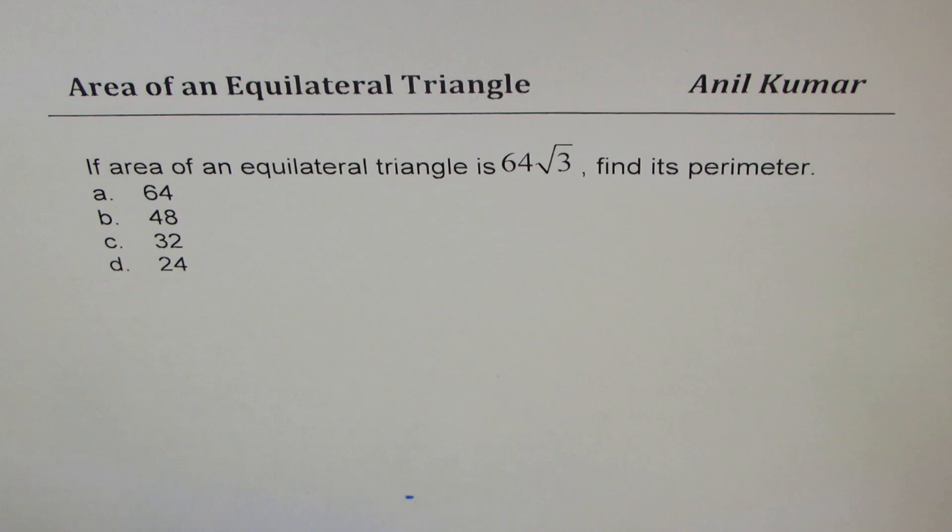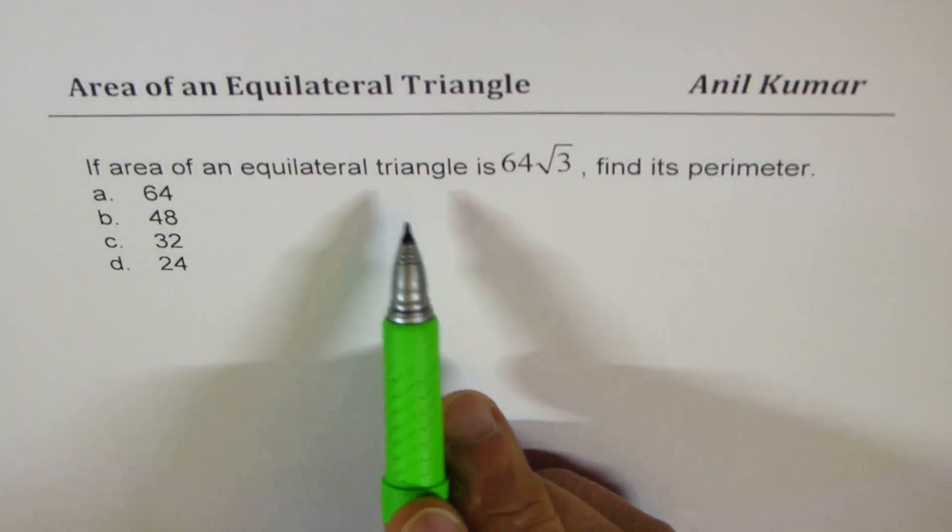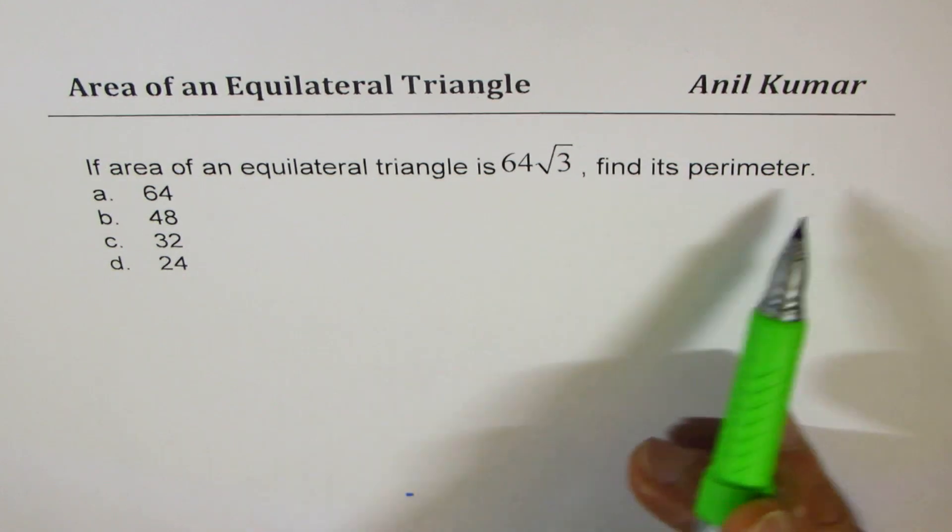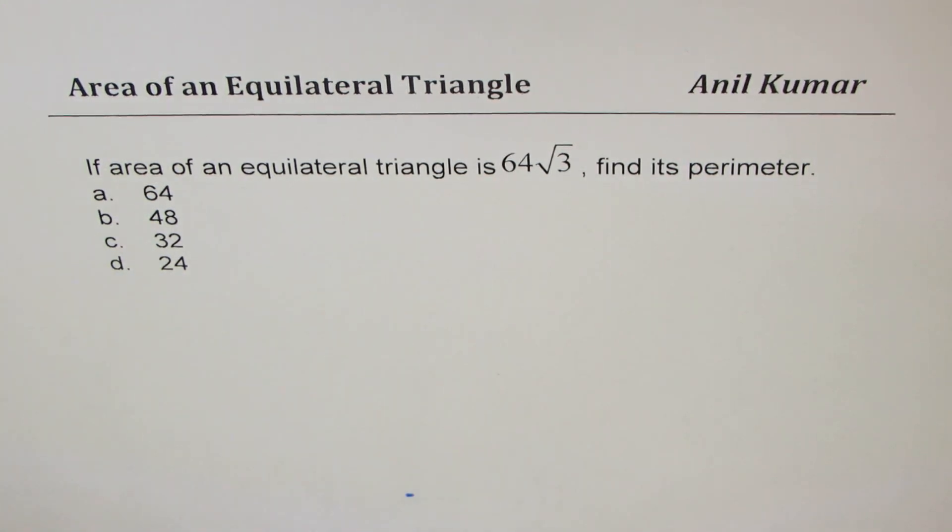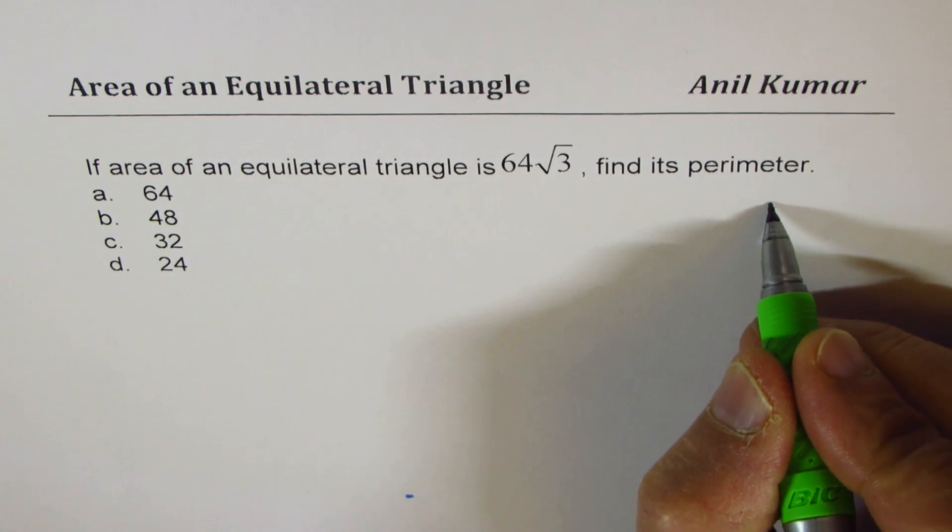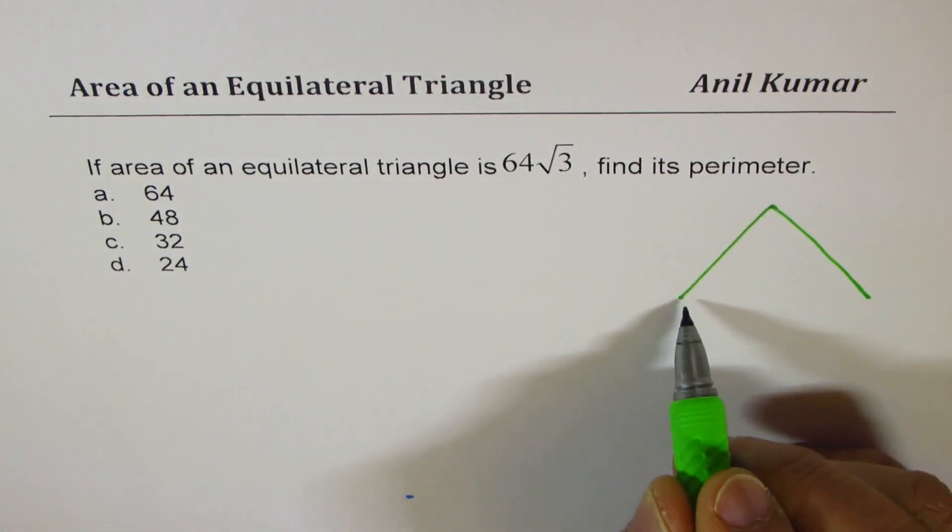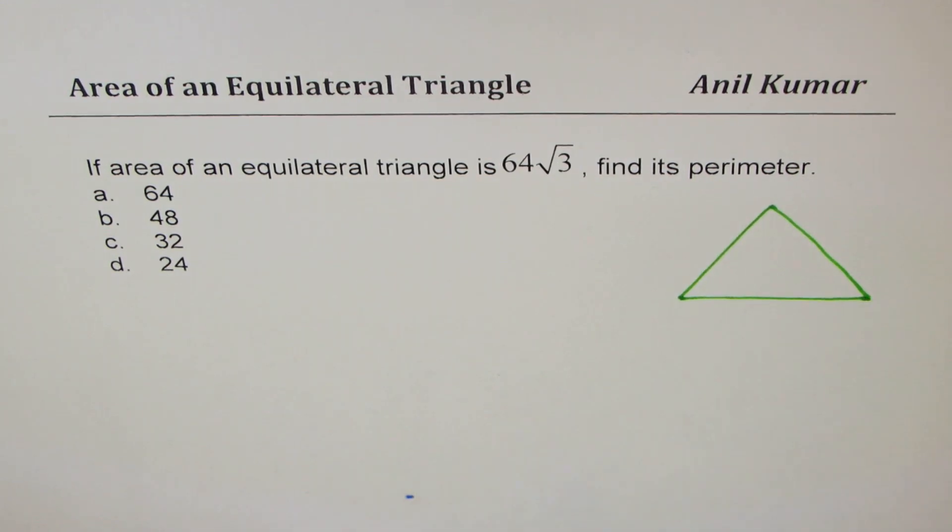The question is, if area of an equilateral triangle is 64 square root 3, find its perimeter. Four choices are given to you. So you can pause the video, copy the question, answer, and here I'll try to provide you with some solutions.